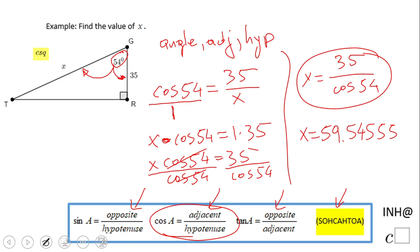Looking back at the problem, we get 59 something. That is greater than 35, so the answer is reasonable.